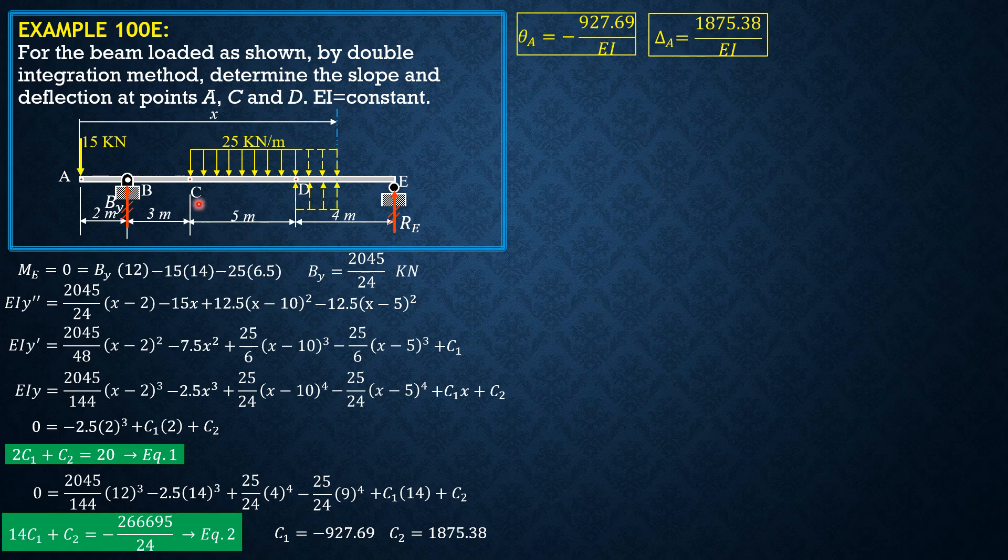Then, we set X equals 5 to solve for the slope at C. So into this equation, EI theta C equals 2045 over 48 times 3 squared minus 7.5 times 5 squared, plus C sub 1. Terms with negative quantities in parentheses are ignored. So theta C equals negative 735.75 over EI.